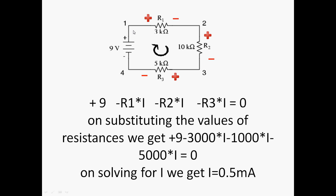Now, as I have crossed the battery, I will try to cross the resistance. While crossing the resistance, I have to travel from the positive sign to the negative sign. Hence, there is a fall in potential, giving a negative sign in the equation. The value of the potential drop is given by the current passing through resistance R1 multiplied by R1 — that is simply Ohm's law — so minus R1 times I.